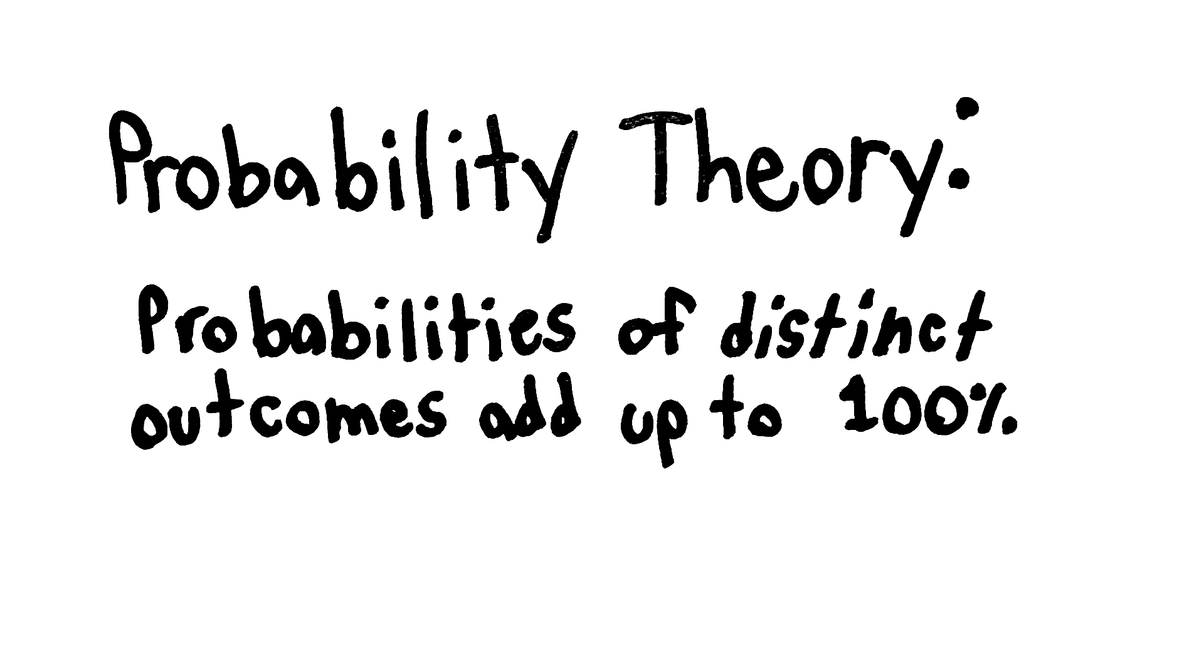Probability theory is the rules that probabilities follow. The general idea is pretty simple. You take all the distinct outcomes that can happen, and their probabilities need to add up to 100%.